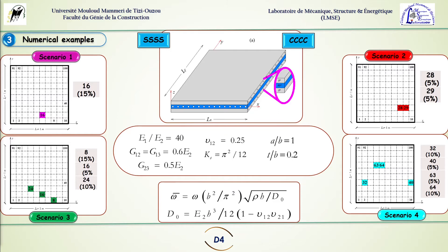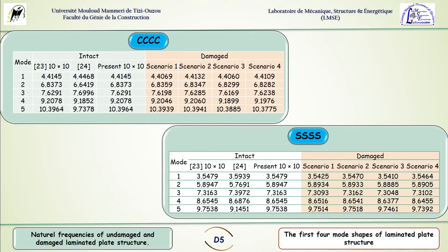The properties of this plate are displayed in this slide and we compare the first five frequencies in the intact plate and in the damaged plate for all four scenarios. In the intact side we compare our frequencies with the frequencies of two other works referenced in 23 and 24.